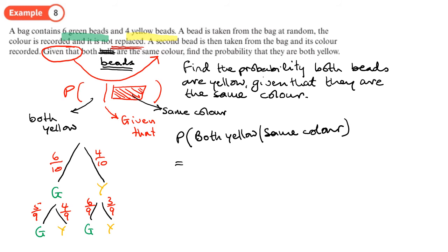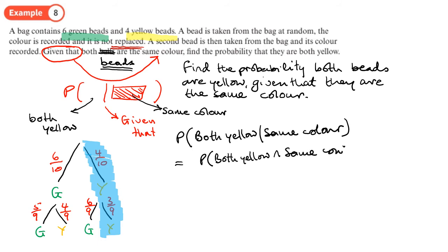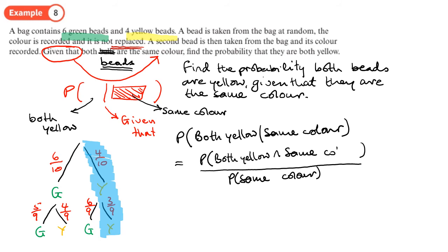Now let's work out the probability. We apply the conditional probability rule: the probability both yellow given the same color equals the probability of both yellow AND same color, over the probability of same color. The top part — probability they're both yellow and the same color — is 4 over 10 times 3 over 9.